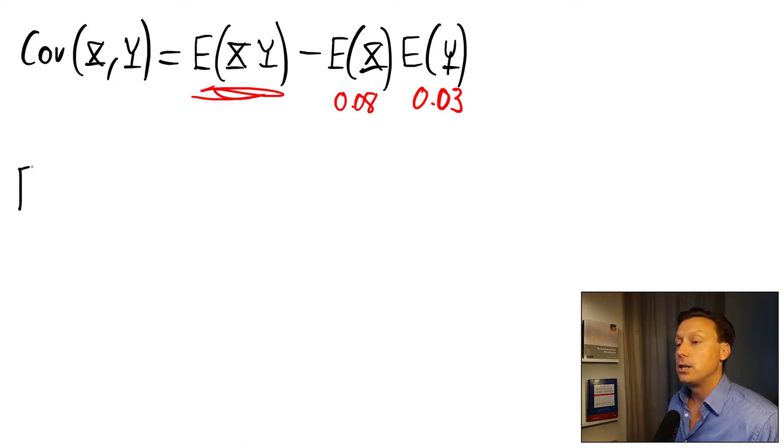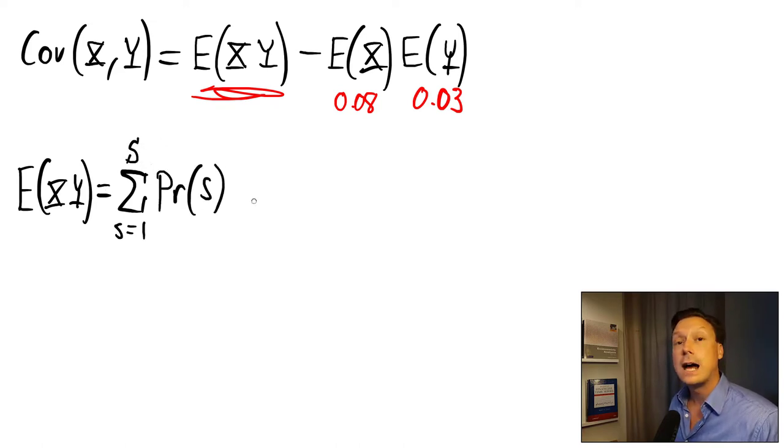To find the expectation of the cross product, we use the same approach that we have always been doing when we use the expectation operator. We sum over all possible states of the world, we take the probability to end up in each state times the outcome in each state. But in this case we have the outcome of X and Y, so that means we have the outcome of X times the outcome of Y.